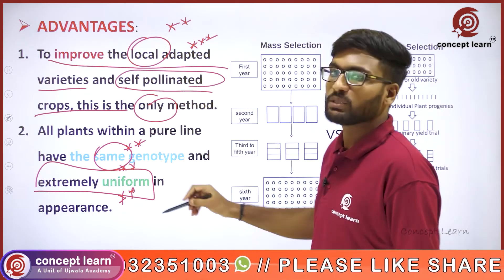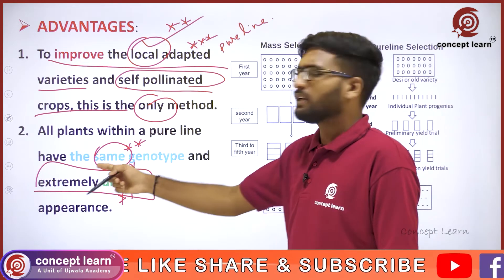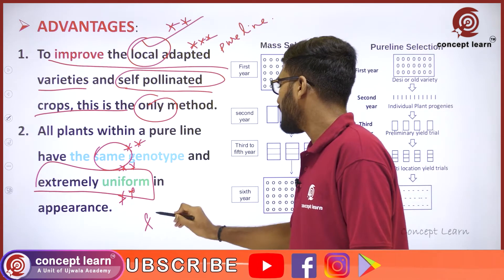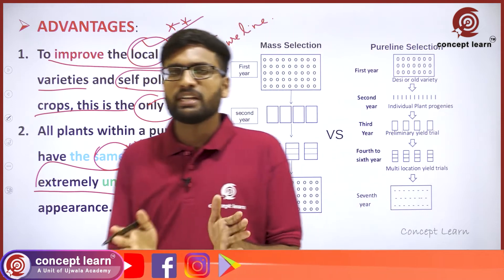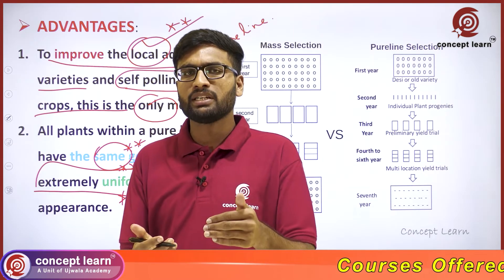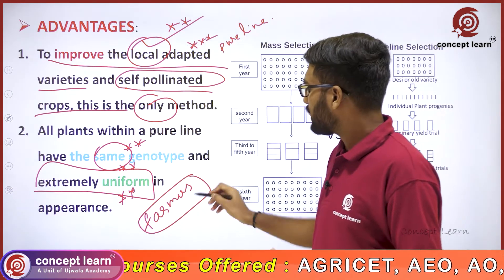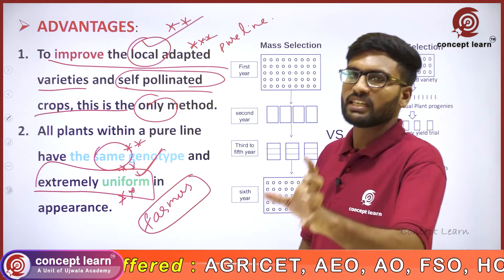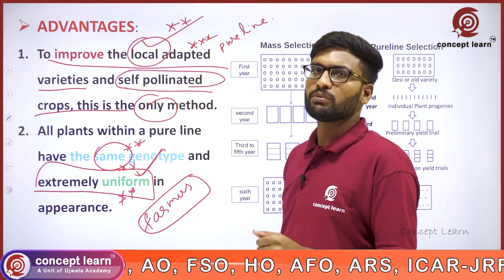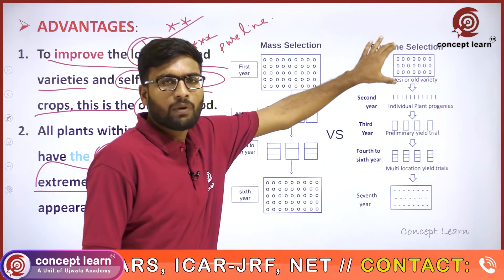Two advantages: first, for improvement of local varieties; second, for increasing uniformity. Because of this uniformity, farmers will easily accept pure line selected varieties. For example, in paddy, if grains are uniform, farmers will accept it. That is uniformity — pure line selected varieties are accepted by farmers because of their extreme uniformity, since they are produced from single plants.